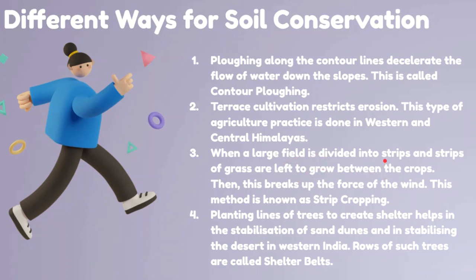When a large field is divided into strips and strips of grass are left to grow between the crops, this breaks up the force of wind — this method is known as strip cropping. Planting lines of trees to create shelter helps in the stabilization of sand dunes and in stabilizing the desert in western India. Rows of such trees are known as shelter belts.